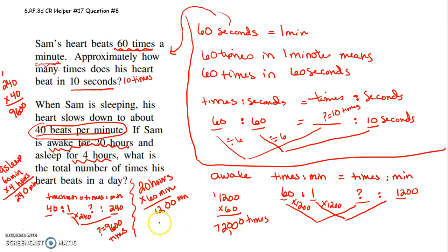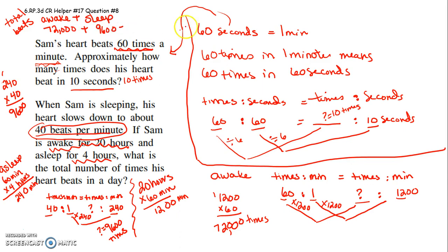So how do I figure out the total number of beats in a day? Total beats: I need the beats when he's awake plus the beats when he's asleep. I take 72,000 and add 9,600 for while he was asleep. 72,000 plus 9,600 — zero, zero, six, nine and two is 11, seven, and one — 81,600 beats per day. That work is all over the place. Let's hope you watch the video and don't just look at the hard copy. Hope that helps!